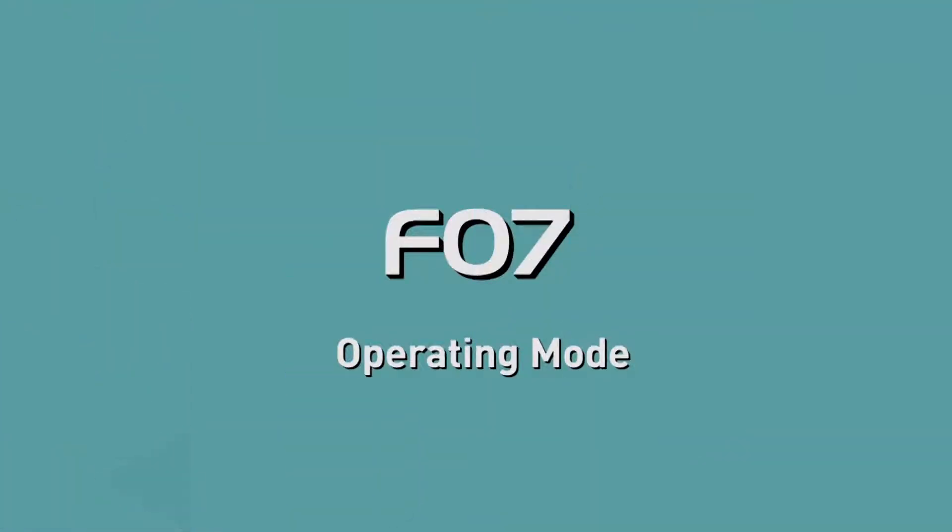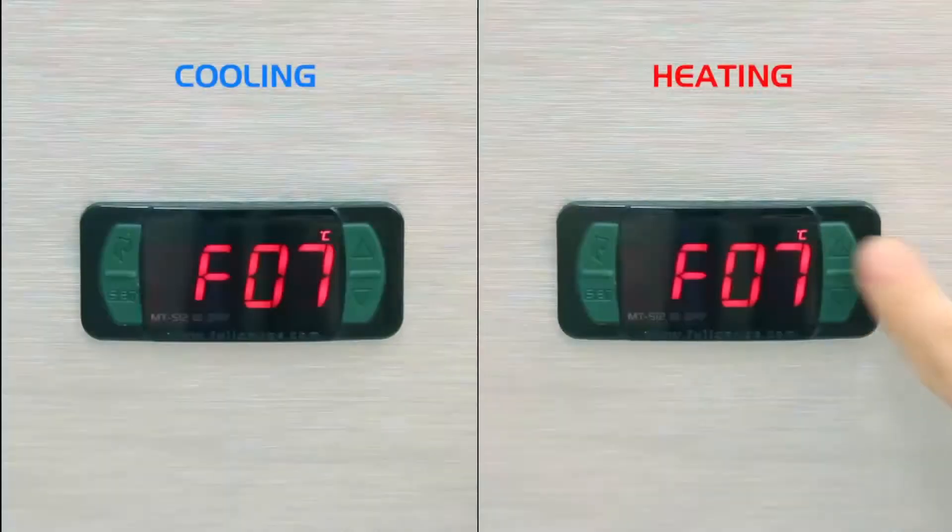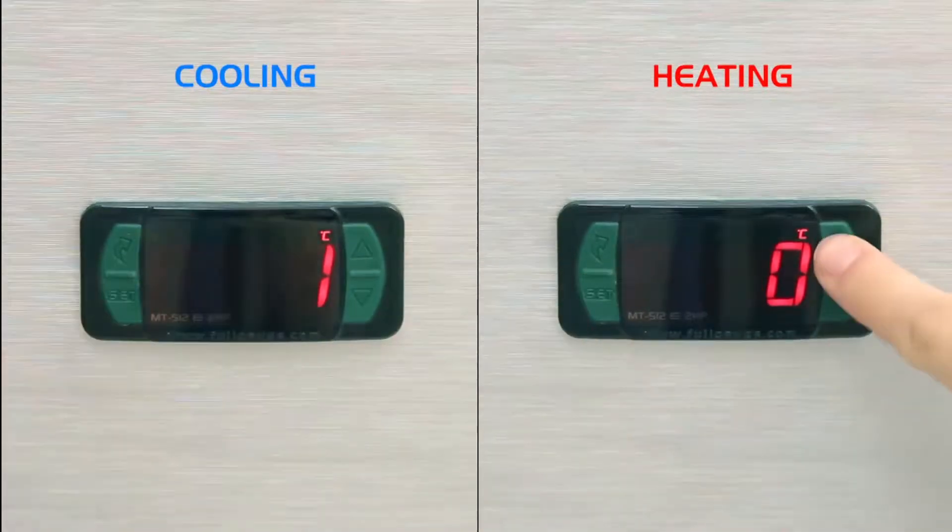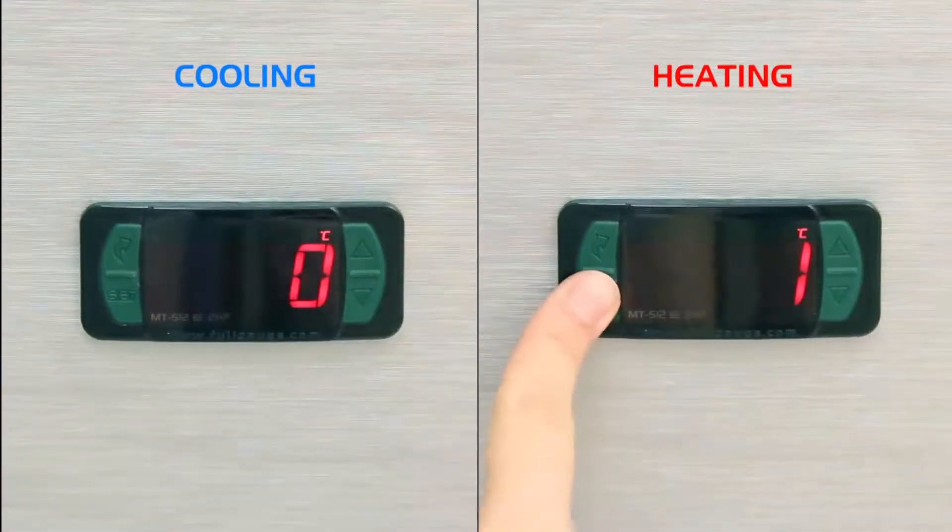F07 Operation Mode: To operate in cooling, assign the 0 value, and value 1 to operate in heating.